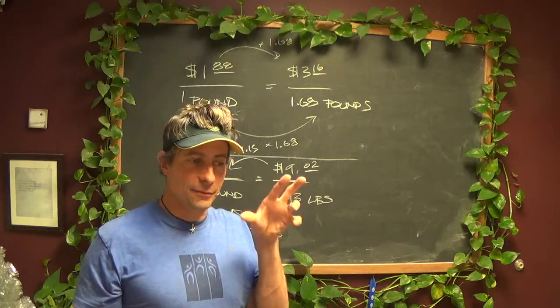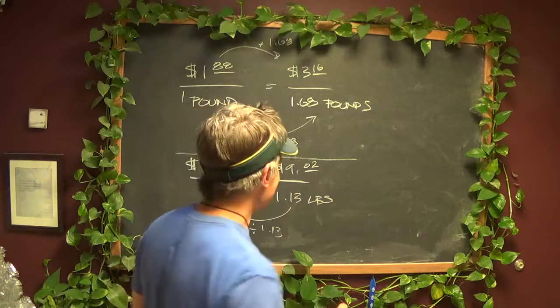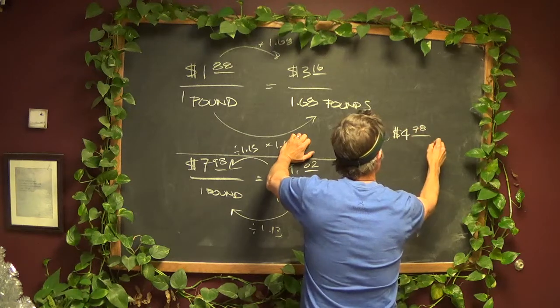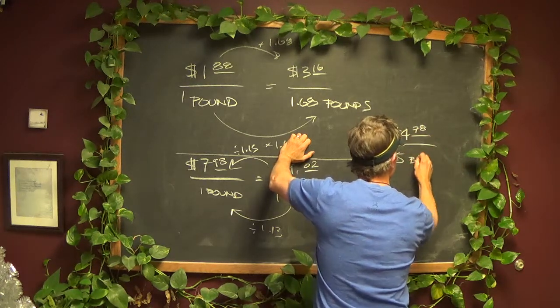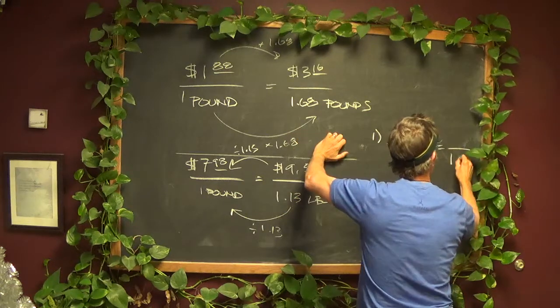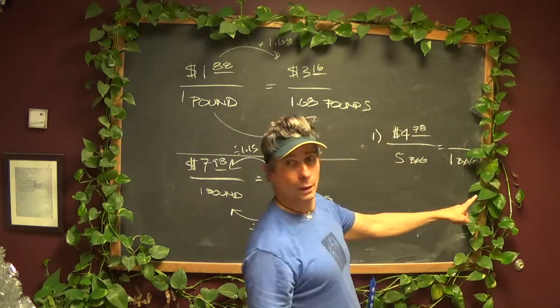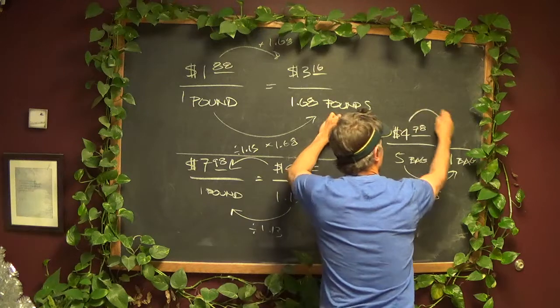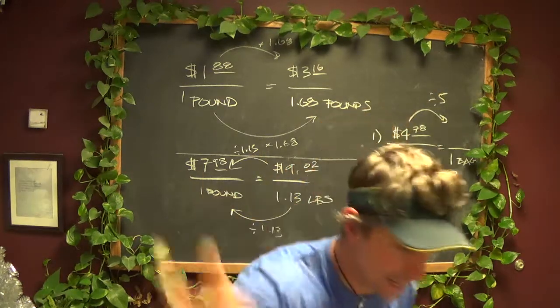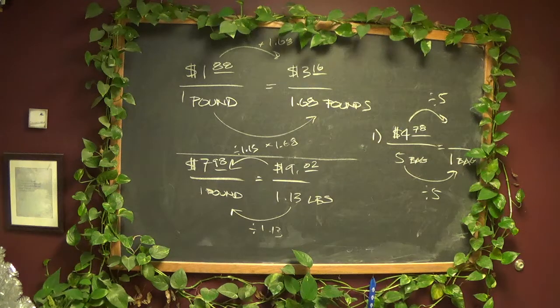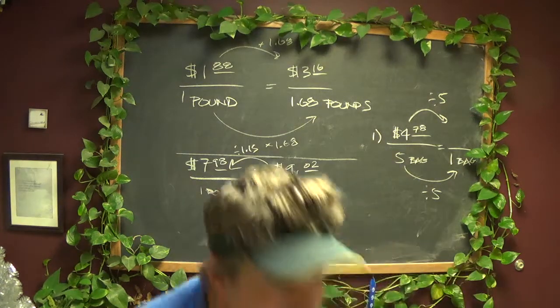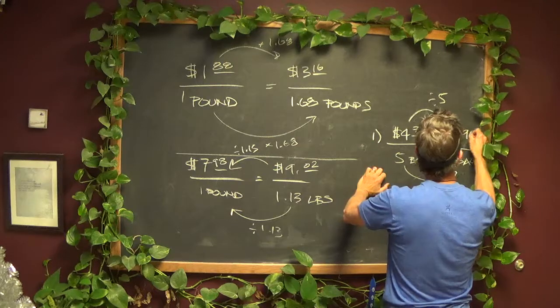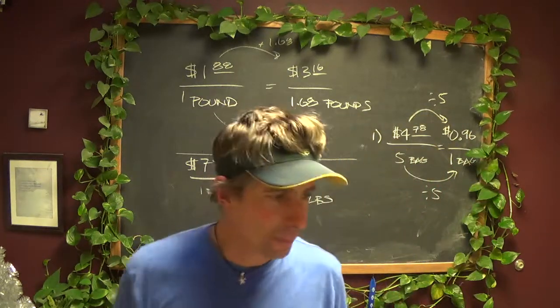So then I said what's the unit cost of Dave's per bagel? So if Dave is $4.78 for five bagels, how much is it for one? So hopefully you see what you have to do. You've got to divide by five to get from five to one, so we're also going to have to divide by five here to get from $4.78 to, and I can't do this in my head, and I don't expect you to either. That's going to be 95.6 cents a bagel. We'll just call that 96 cents.